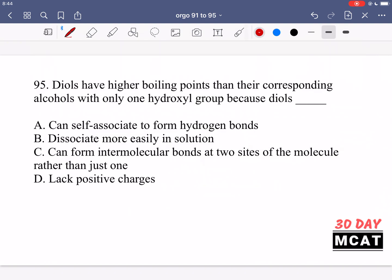In question 95, it says diols have higher boiling points than their corresponding alcohols with only one hydroxyl group because diols blank. We're comparing diols to the alcohol with just one hydroxyl group. For example, a three carbon chain with one OH versus two OHs - the diol would have a higher boiling point. Why is that? Boiling point is dependent on breaking molecules apart from each other, so we're talking about intermolecular attractions.